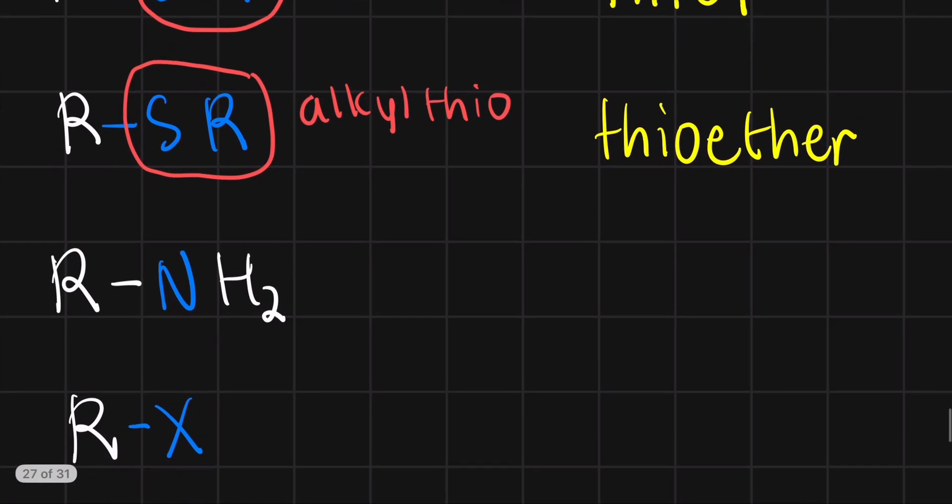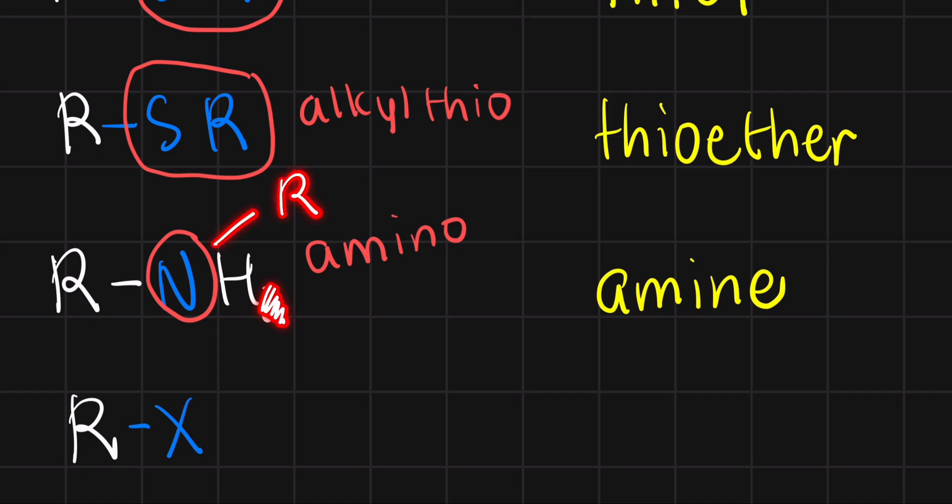But now, what if I have a nitrogen as my functional group? The name of the class of organic compounds is amine. And the nitrogen itself has a very slightly different word or spelling to it, amino. I can say that compounds containing the amino group are called amines. You may also notice that this time, I did not highlight or even put a color to the hydrogen here. These hydrogens are not crucial to the name amino.